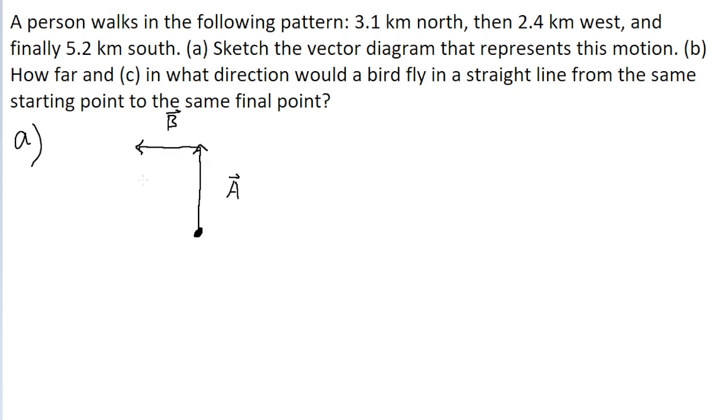And then finally the person travels 5.2 kilometers south, so downwards for south. Again, 5.2 is more than 3.1, so make sure you have it kind of hanging low down here. I'll call this third part vector C. And that's really it for our sketch.